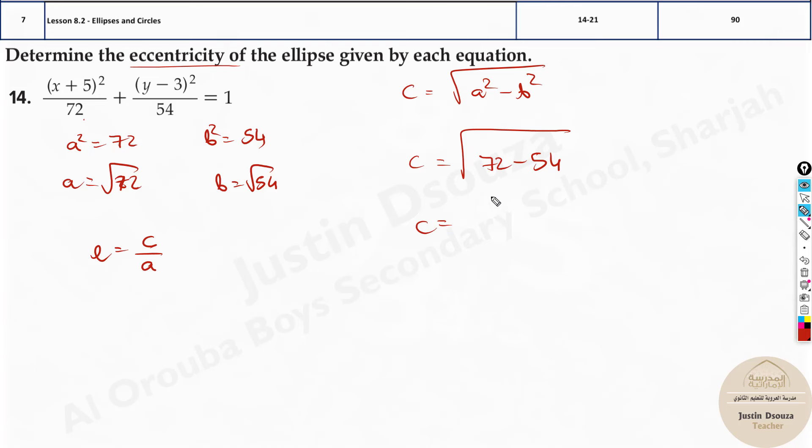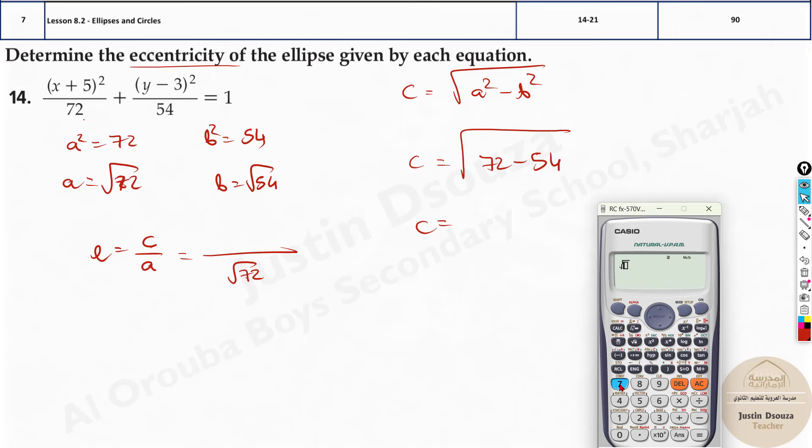So now let's find c value and substitute over here, and then we have a value that is square root 72, and that will give us the answer. We need to use our calculators now. Square root of 72 minus 54 over here is equal to 3 root 2.